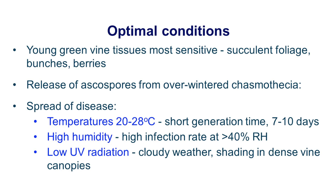In favourable conditions, new spore-bearing colonies can be produced every 7 to 10 days. Ideal conditions for the growth and spread of powdery mildew occur on mild cloudy days when relative humidity is 40% and temperatures are between 20 to 28 degrees Celsius. Rainfall is not required for infection.